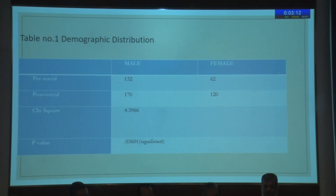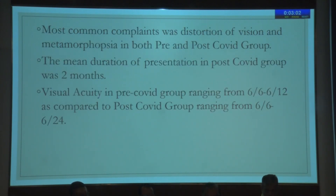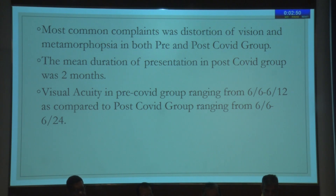The demographic table shows p-values that are statistically significant. The pre-COVID group had 194 CSR cases and the post-COVID group had 290 cases. The most common complaint in both groups was metamorphopsia. Mean duration of presentation in the post-COVID group was 2.1. Visual acuity in the pre-COVID group ranged from 6/6 to 6/12, compared to 6/6 to 6/24 in the post-COVID group.